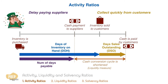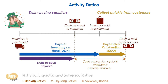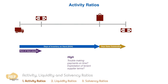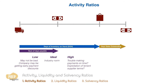As with most ratios, it's never a simple case of having as long a number of days payable and as short a number of days sales outstanding as possible. An excessively high days payable could indicate trouble making payments on time or exploitation of lenient supplier terms. Conversely, a low number of days payable may not be bad — it could be the result of a company taking advantage of early payment discounts. As such, the desirable figure for number of days payable should be somewhere close to the industry norm.